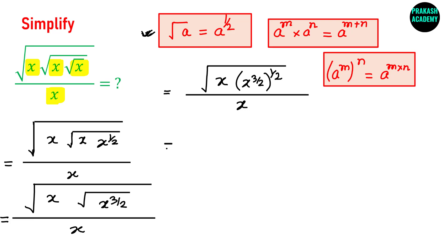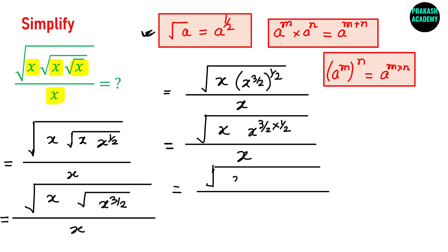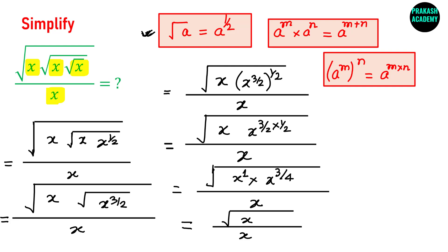Now let us apply this rule. In the denominator we have x, and in the numerator we have x and x raised to the power 3 by 2 multiplied by 1 by 2. That gives us the square root of x times x raised to the power 3 by 4, divided by x. Once again you can add the powers: here you have 1 by 2 and here 3 by 4, and adding gives 7 by 4.